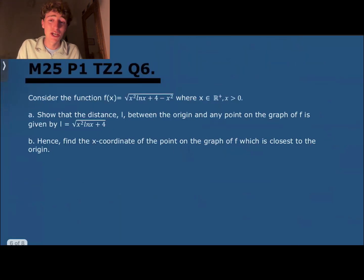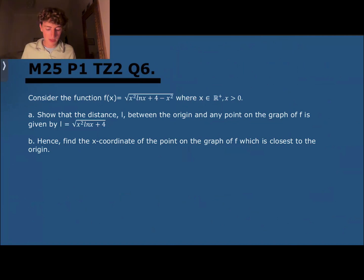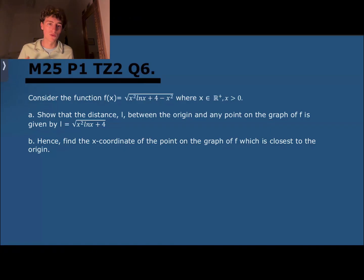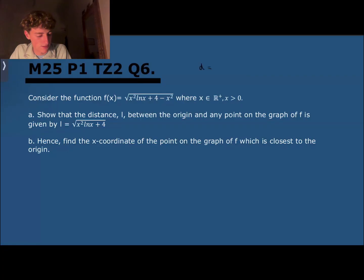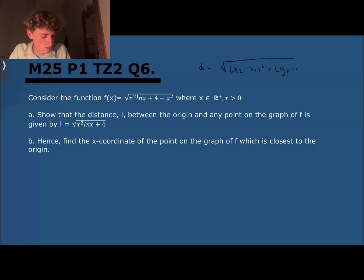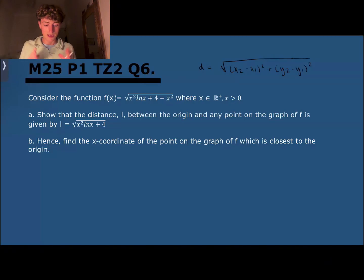The next question asks us to consider the function f(x) = root of (x² ln x + 4 minus x²). Part a asks us to show that the distance between the origin and any point on the graph is given by a specific formula. The distance formula — which is in the data booklet — is the square root of (x2 minus x1)² plus (y2 minus y1)².